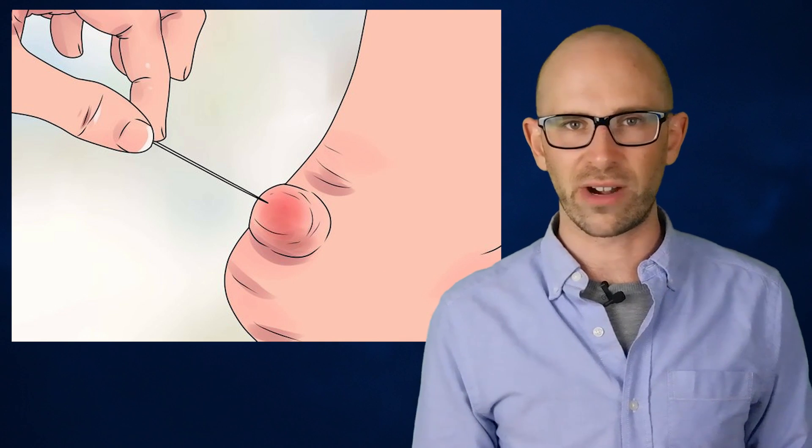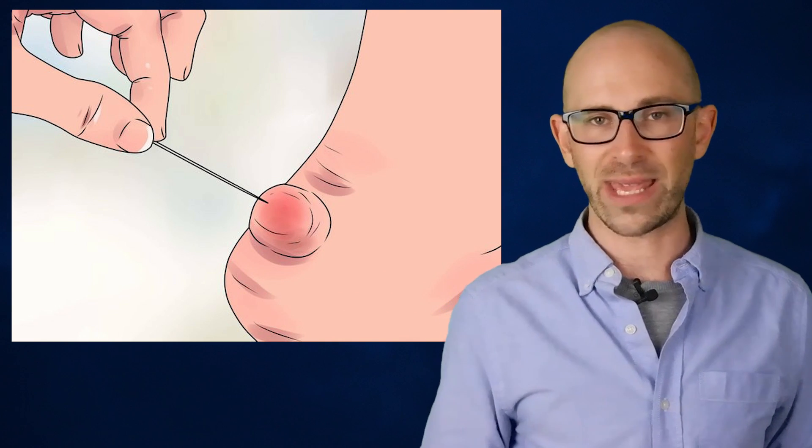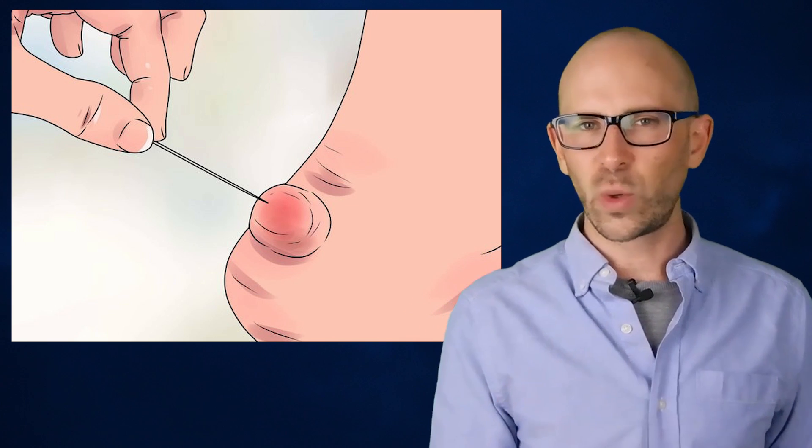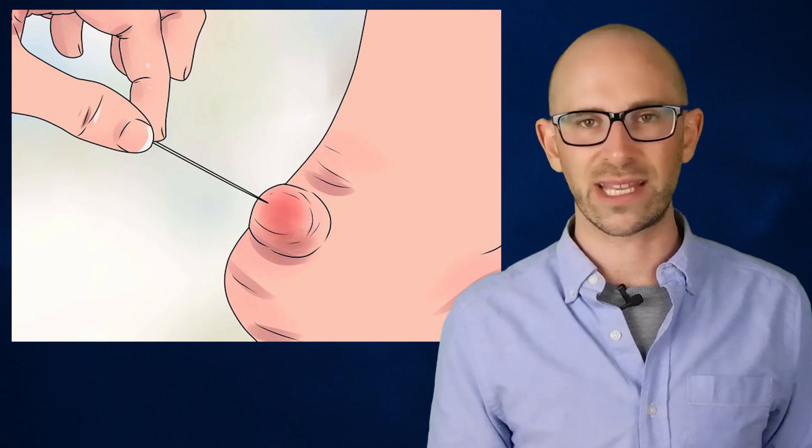Should you need to burst your bubble, it might behoove you to follow a few simple techniques. Use a sterilized needle or razor blade. To sterilize it, put the point or edge in a flame until it is red hot or rinse it in alcohol. Wash the area thoroughly, then make a small hole and gently squeeze out the clear fluid.